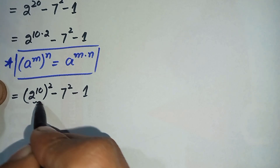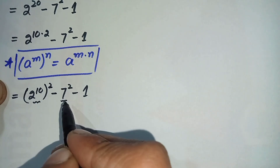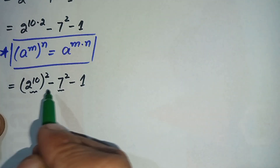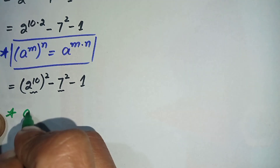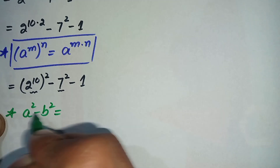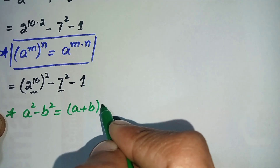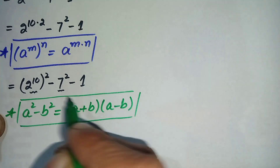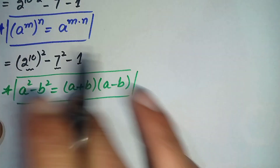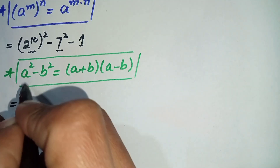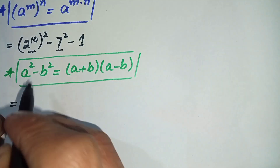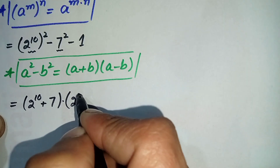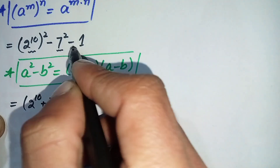Now look at these two terms: 2 raised to power 10 whole squared minus 7 squared. This is the famous algebraic identity a squared minus b squared, which can be written as (a plus b) times (a minus b). By using this identity, where a is 2 raised to power 10 and b is 7, this equation becomes (2 raised to power 10 plus 7) times (2 raised to power 10 minus 7), and we write the minus 1 separately.